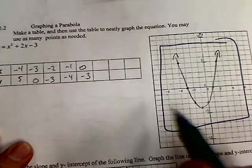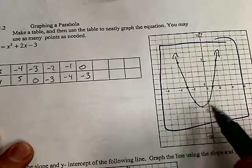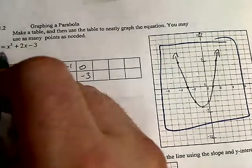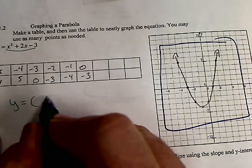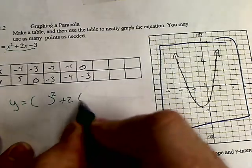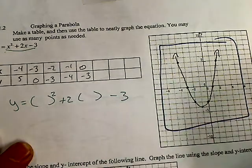So now I have my parabola. I know it's going to be a parabola because it has a squared in it: y equals x squared plus 2 times x minus 3. Now I'm just gonna plug in numbers.